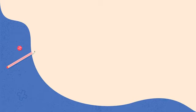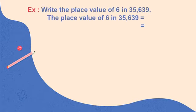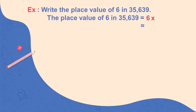Next example: write the place value of 6 in 35,639. Using the formula, the place value of a digit equals digit into value of its place. Here the digit is 6, and 6 is in the hundreds place, so the value of that place is 100. Therefore, 6 × 100 = 600.